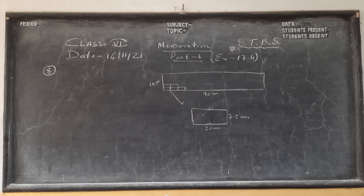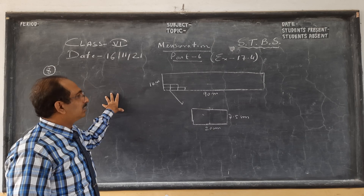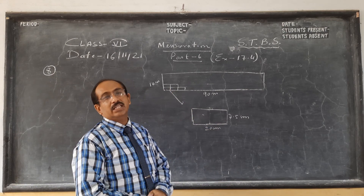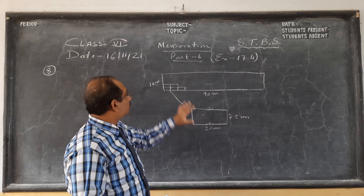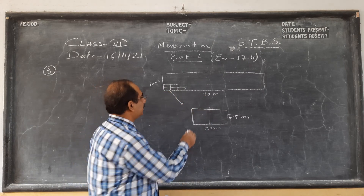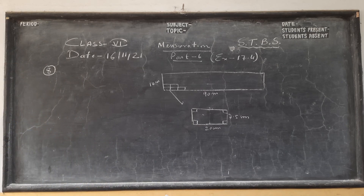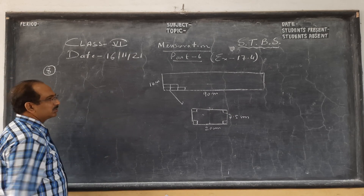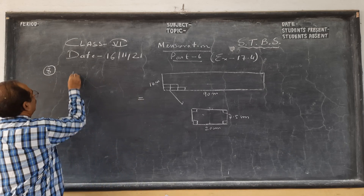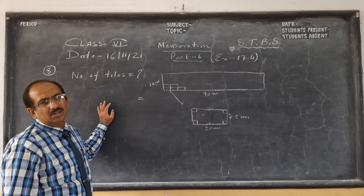So the next question is very interesting. Mensuration has a huge practical application. For example, in a bathroom or washroom we put tiles — tiles give a good look and are water resistant. So there is a footpath which is 10 meters wide and 90 meters long, and you have to put tiles on it. We have to find the number of tiles required. This is very practical — when you are doing renovation or making a new washroom, you calculate how many tiles you need. You cannot bring too few or too many packets.